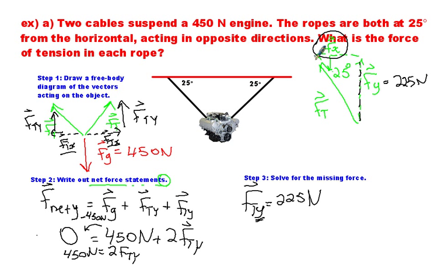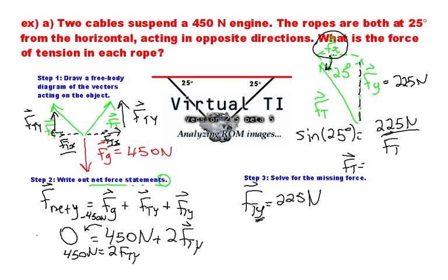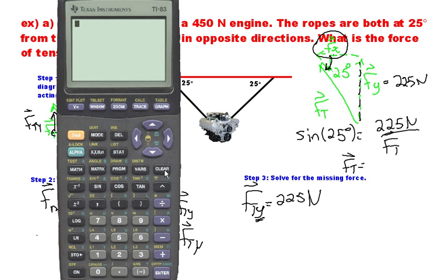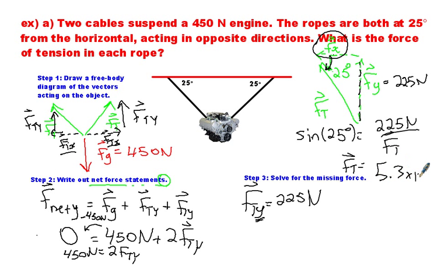225 newtons, that's the y component. If I want to find the hypotenuse here, I think I'm going to have to use sine. I've got my angle of 25 degrees. I've got the opposite side is 225. I'll find the force of tension using sine. So sine 25 degrees equals the opposite side, 225 newtons, over the force of tension. So the force of tension equals 225 divided by the sine of 25 degrees, which is 5.3 times 10 to the 2 newtons. That is the force of tension in the wire.